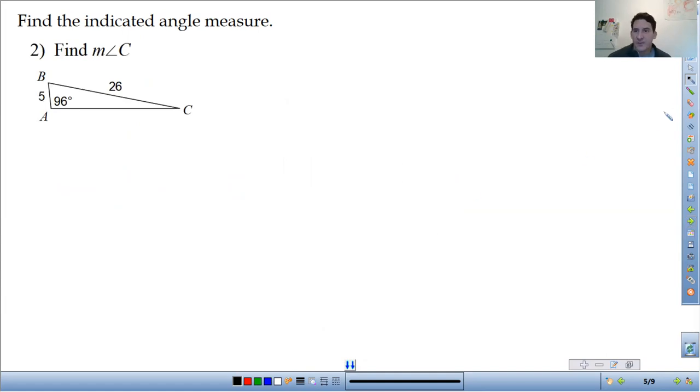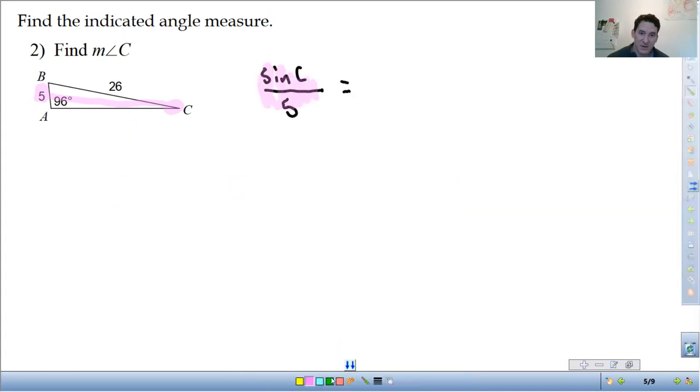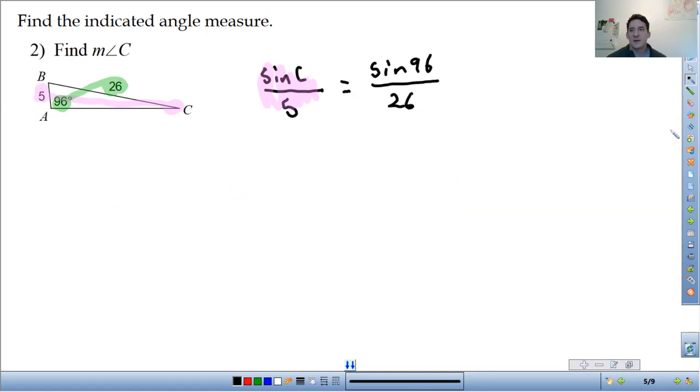Alright, find the measure of angle C again. So careful with what you're looking at. So we have angle C here, and the side across from it is 5. So that's going to be sine of C over 5 is equal to. I'll highlight it so we can see which part is which. And then there's the 96, and the side across from it is 26. So sine of 96 over 26. So sine of 96 divided by 26, just put that into a calculator first. Sine of 96, divided by 26, comes out to 0.038.